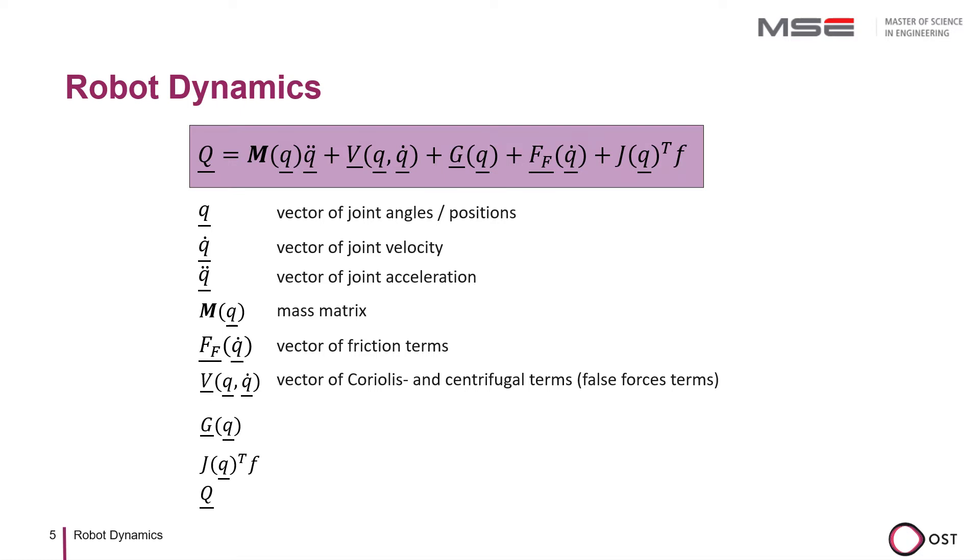For example, if a robot rotates very fast around its z axis, the arm is pulled outwards by the centrifugal force, the false force according to d'Alembert and applies a torque to the elbow joint. This term is therefore dependent on the generalized robot positions and velocities.